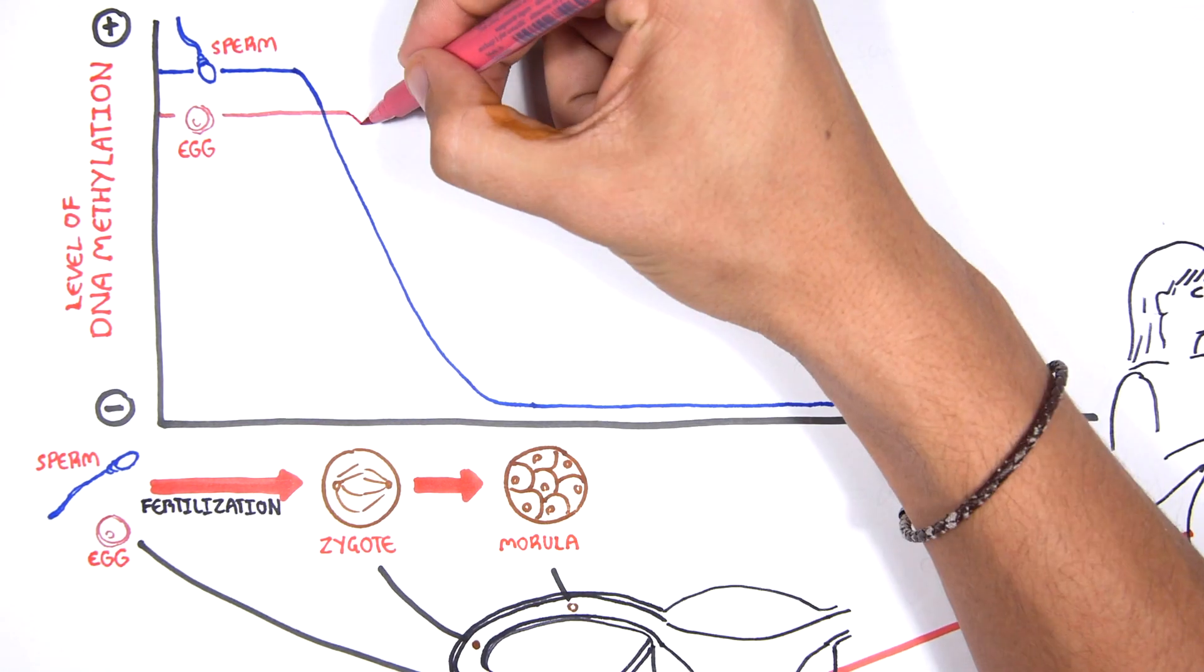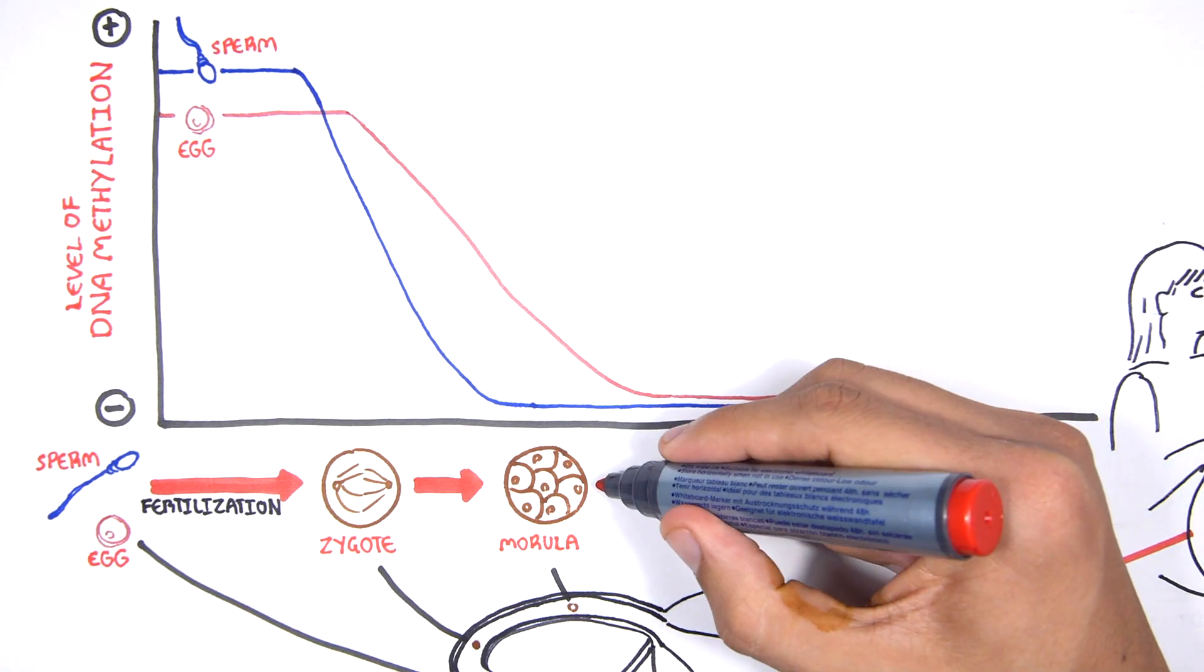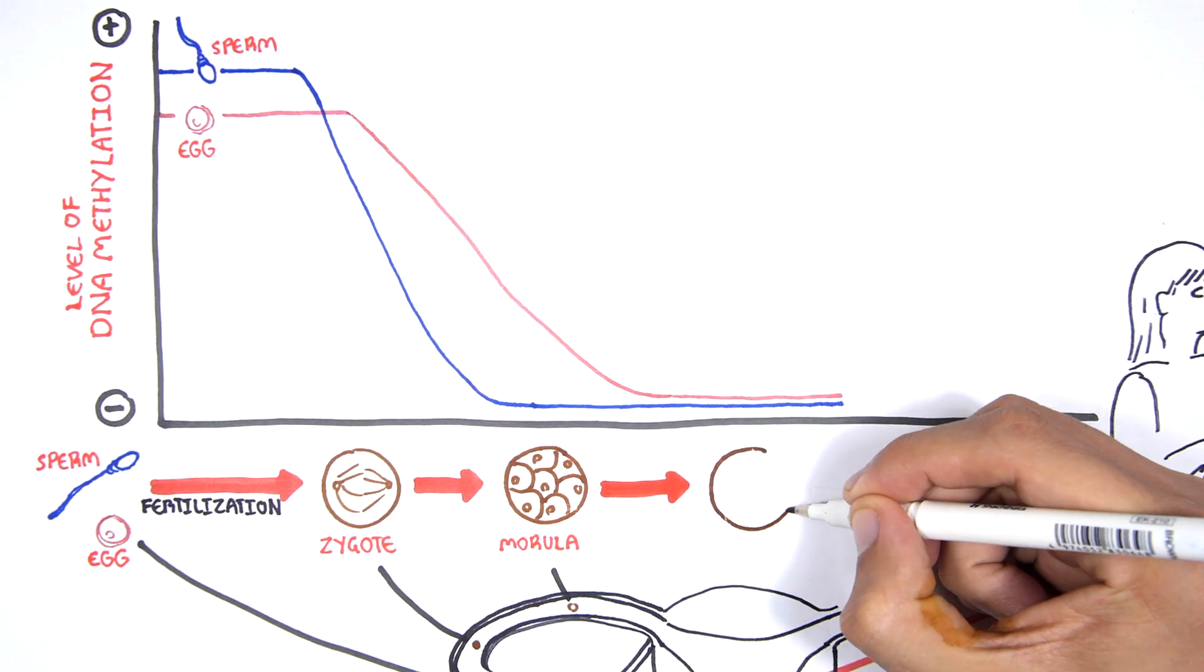The maternal epigenome undergoes gradual, passive demethylation. By the morula stage, the methylation pattern of the embryo is essentially erased.